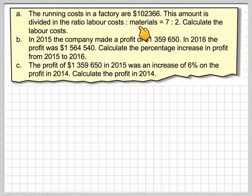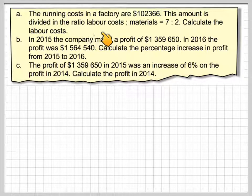The running costs in a factory are $102,366. This amount is divided into the ratio of labour costs to materials in the ratio of 7 to 2. Calculate the labour costs.